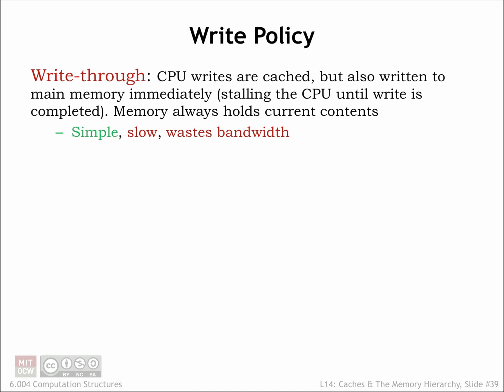The most obvious choice is to perform the write immediately. In other words, whenever the CPU sends a write request to the cache, the cache then performs the same write to main memory. This is called write-through. That way, main memory always has the most up-to-date value for all locations. But this can be slow if the CPU has to wait for a DRAM write access. Writes could become a real bottleneck.